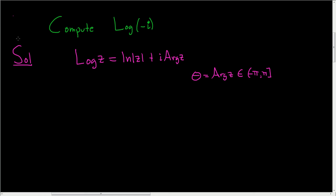In this case, because the problem is so simple, we can simply draw a picture. So here's the complex plane. And here's negative i. And the distance here is 1.